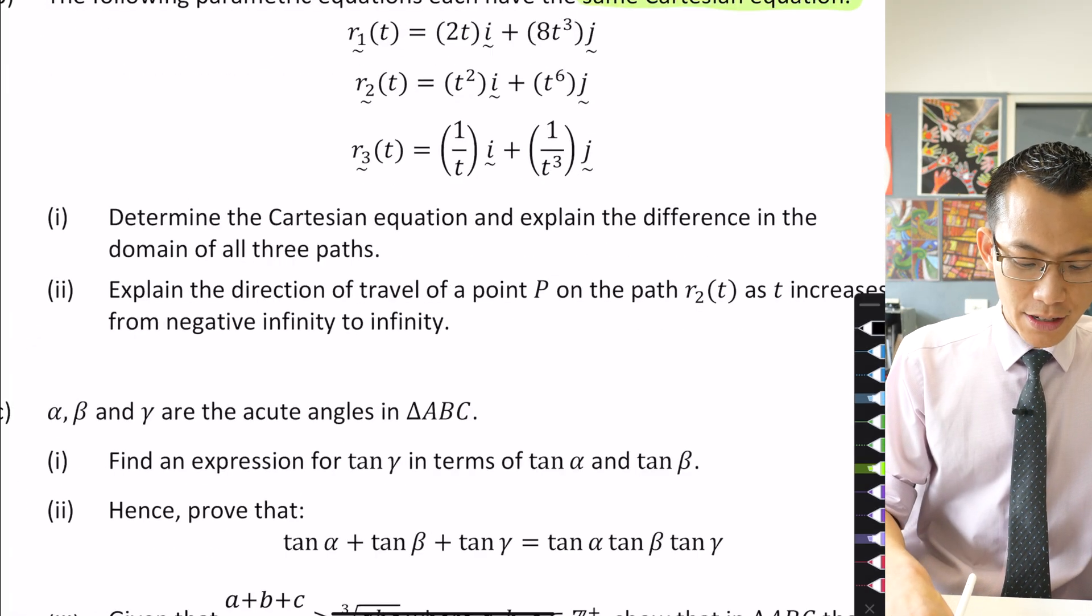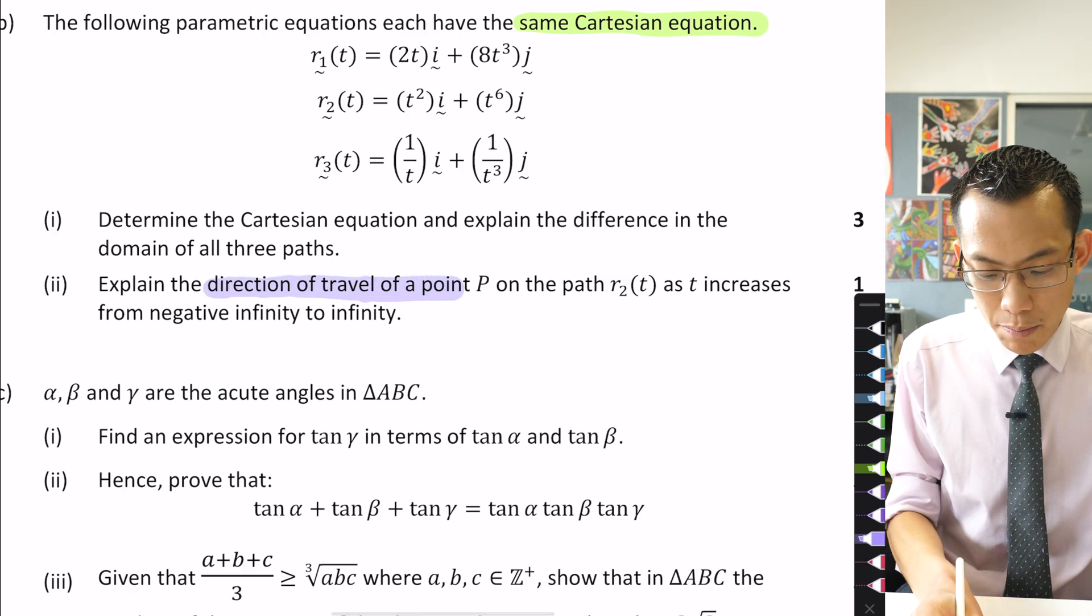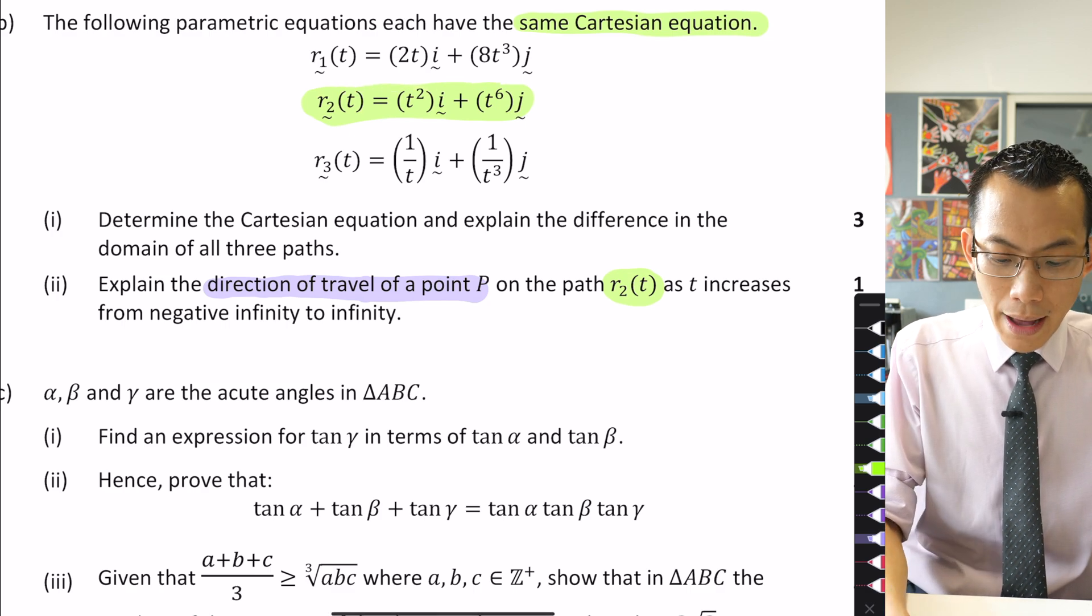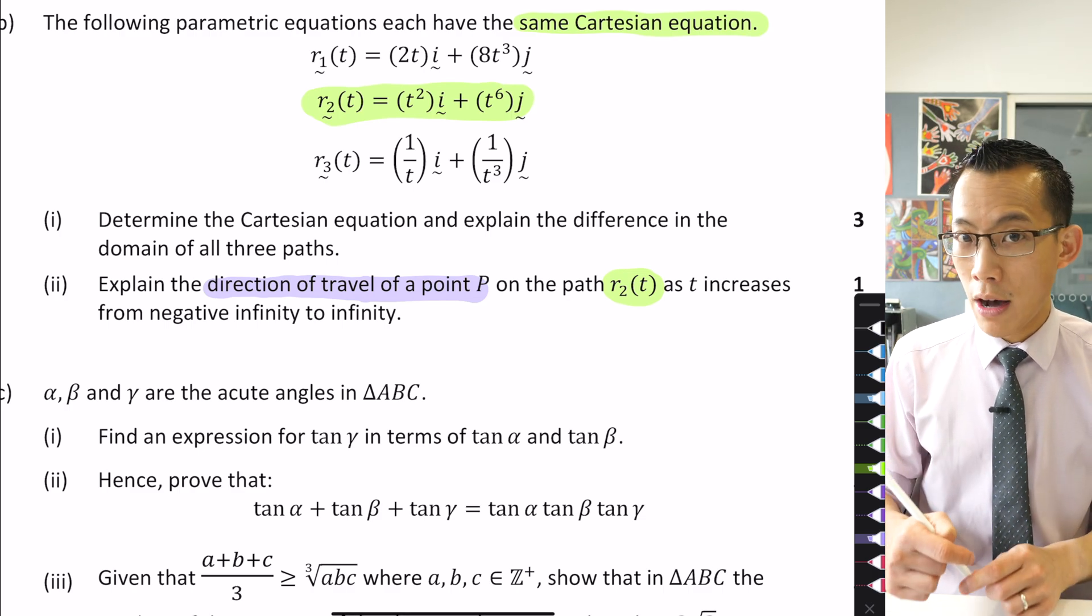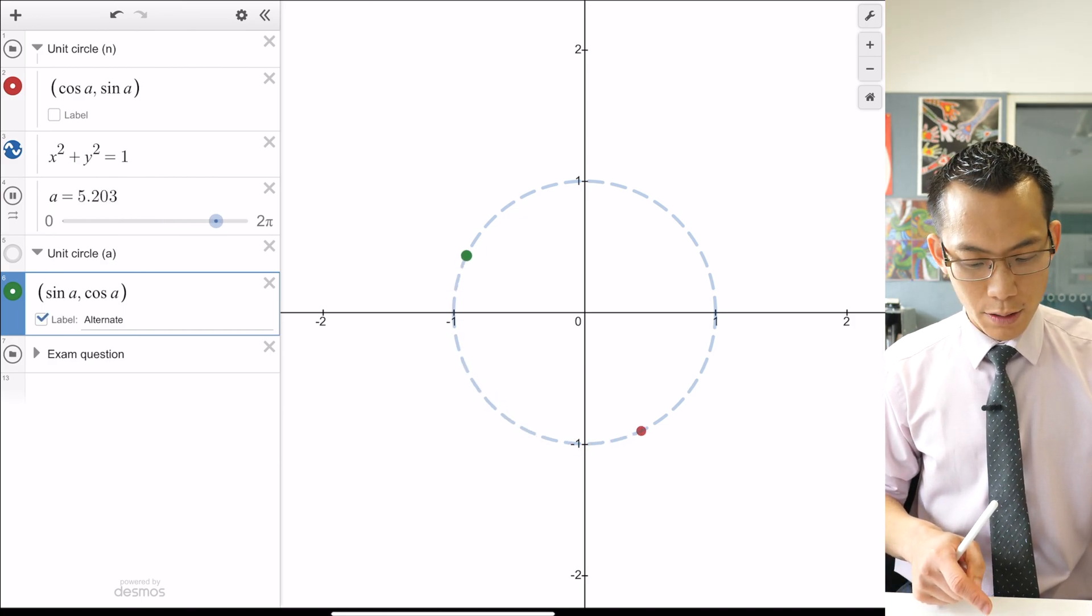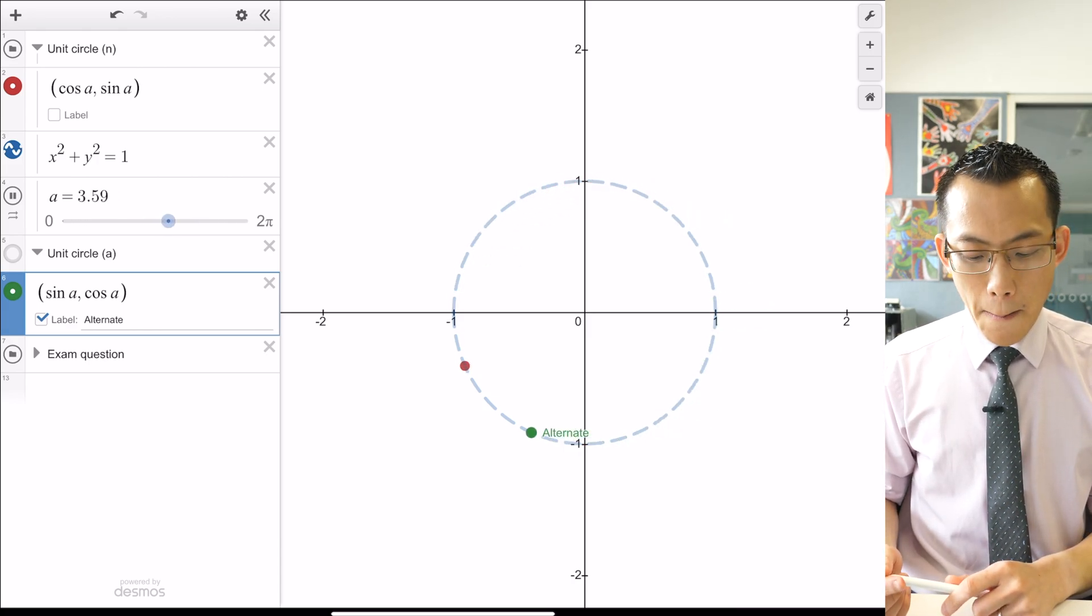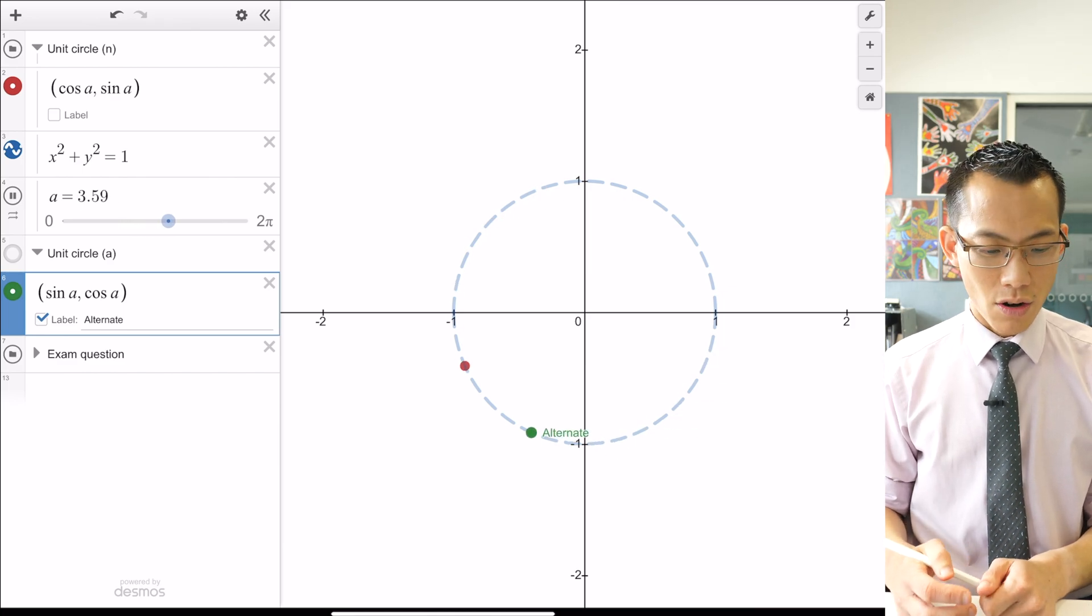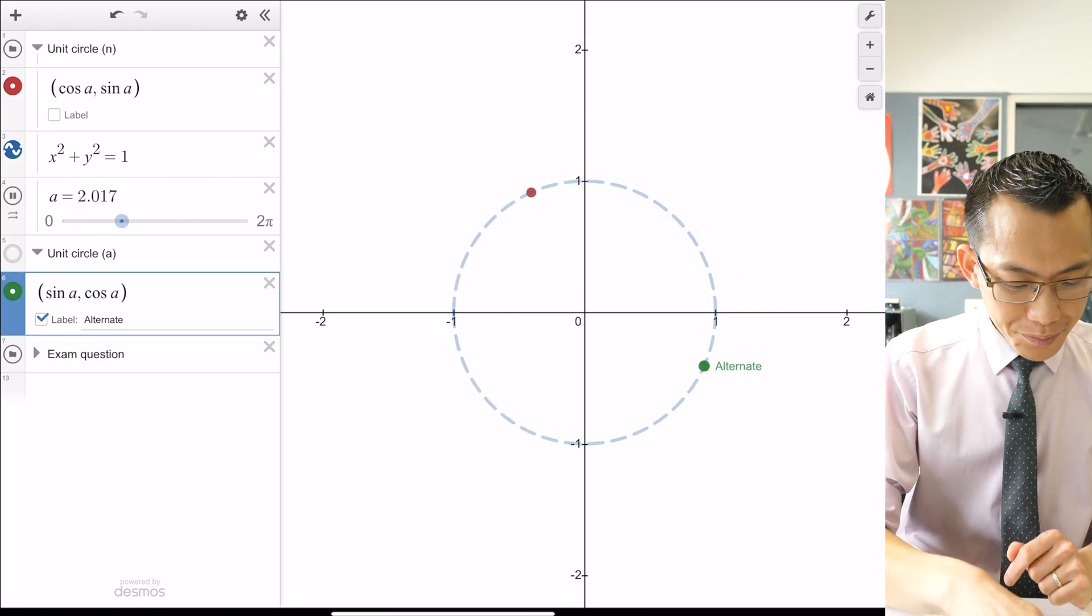When we come back to the exam paper, if you recall, part 2 asks us to push in a little further. It says, explain the direction of travel of a point P on the path r₂, so it's this one here. So as promised, I'm going to go back to Desmos for this one. This is me getting at this idea of, if I hit play here, you can see the normal parametric equations for the unit circle, they move anti-clockwise. But this alternate way, if I've swapped cos and sin, it's moving clockwise. We are looking at y equals x³ for our question. Before we explore Desmos, let's just think algebraically, because you can't bring Desmos into the exam with you, at least not yet.